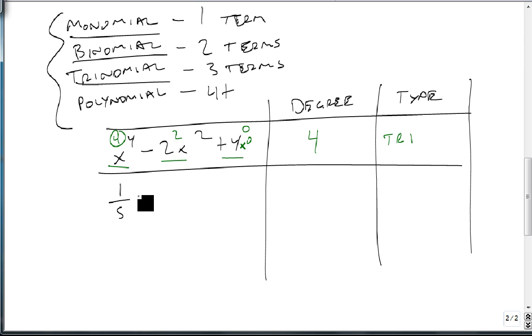If we have 1/5 y cubed minus y, we have to make sure this is a polynomial because this y cubed is not on bottom. It's only the variable on bottom we care about. A number is welcome to be there. So this is degree 3 and degree 1. The highest of those is 3, and since there are 2 terms, this is a binomial.